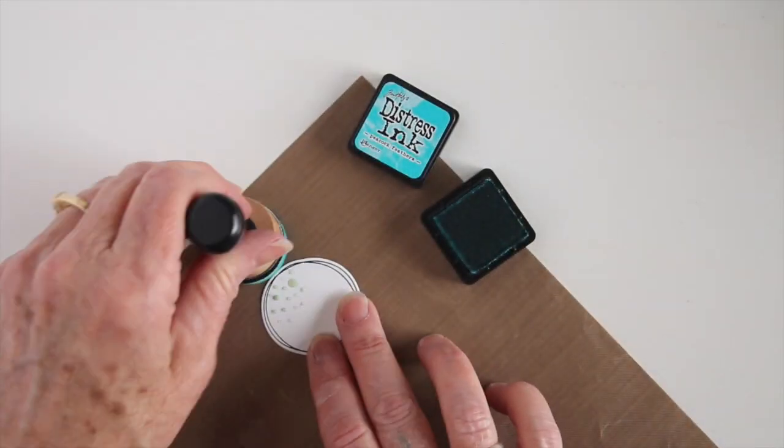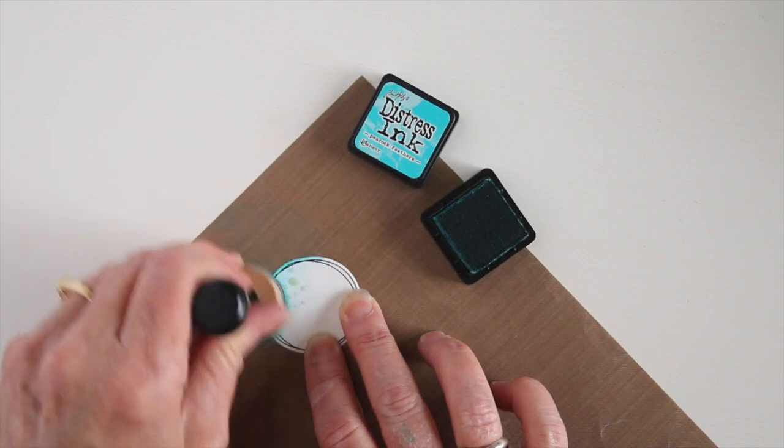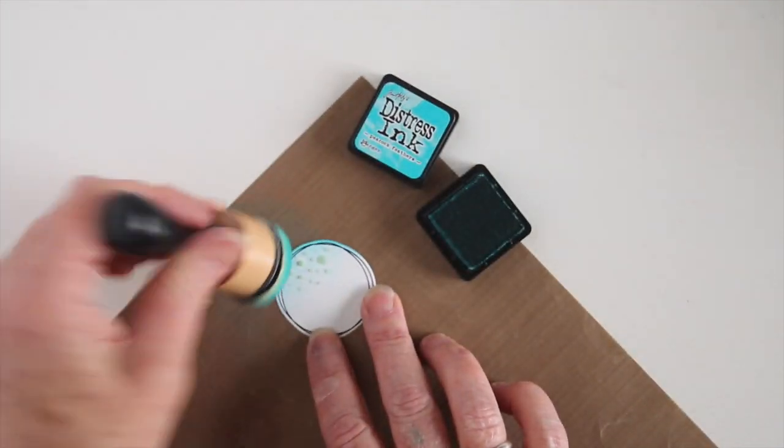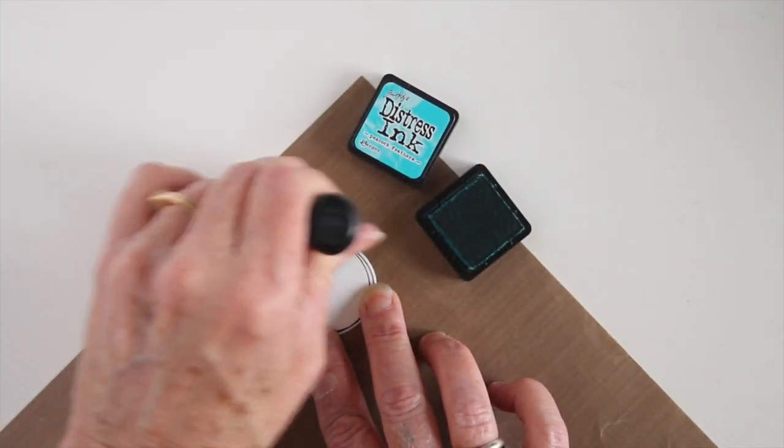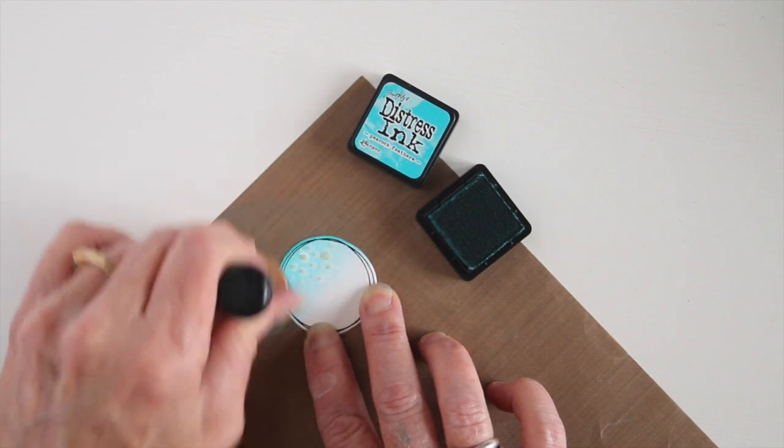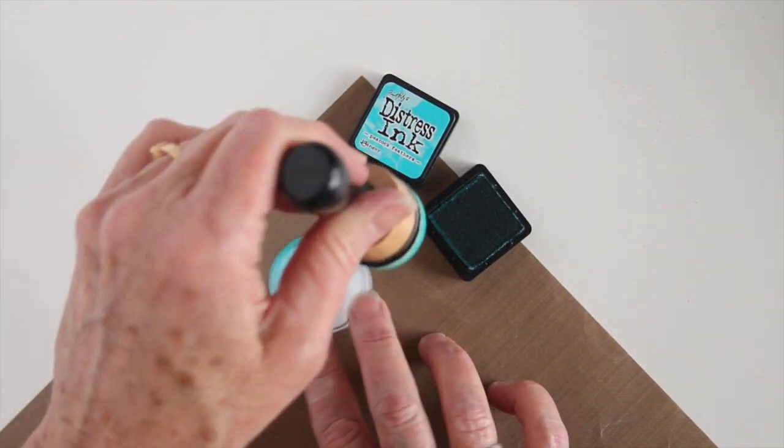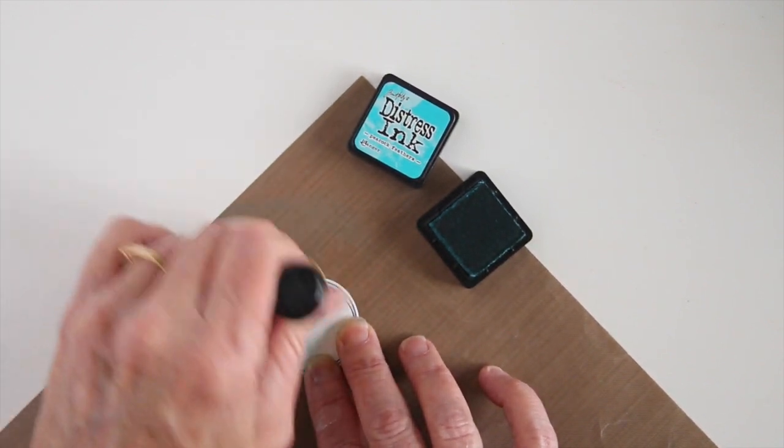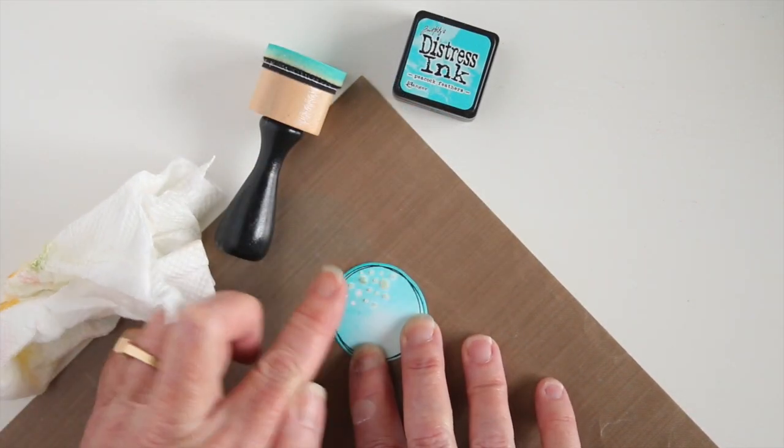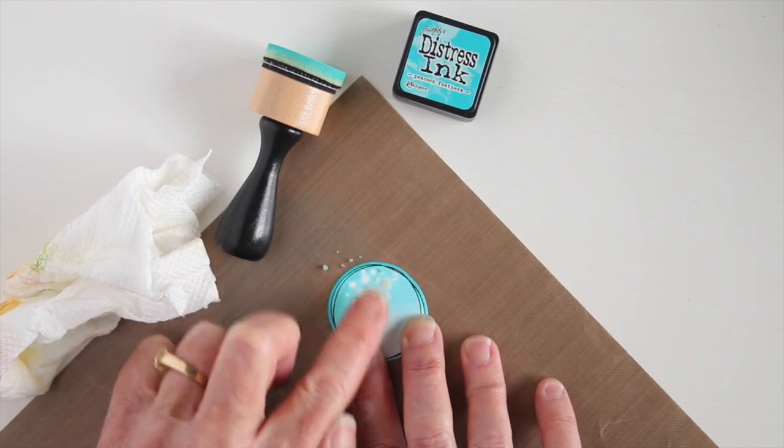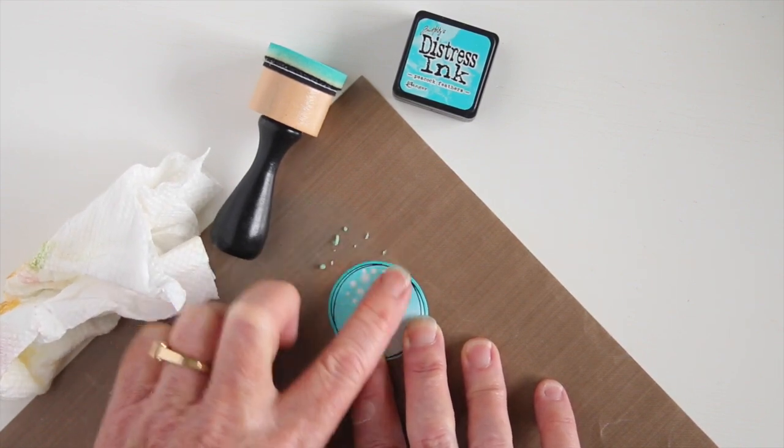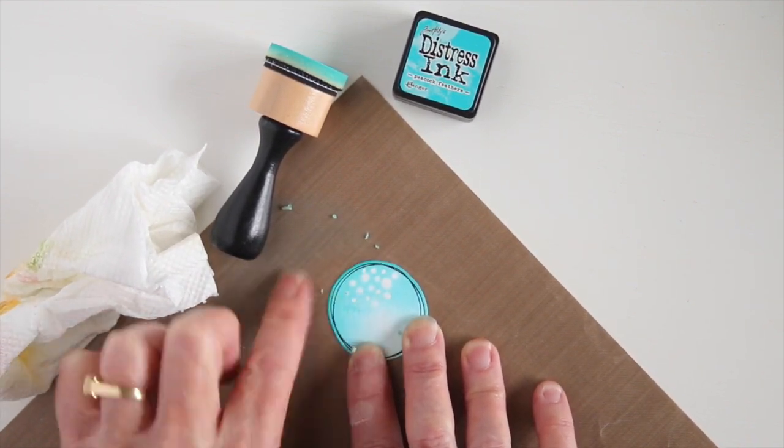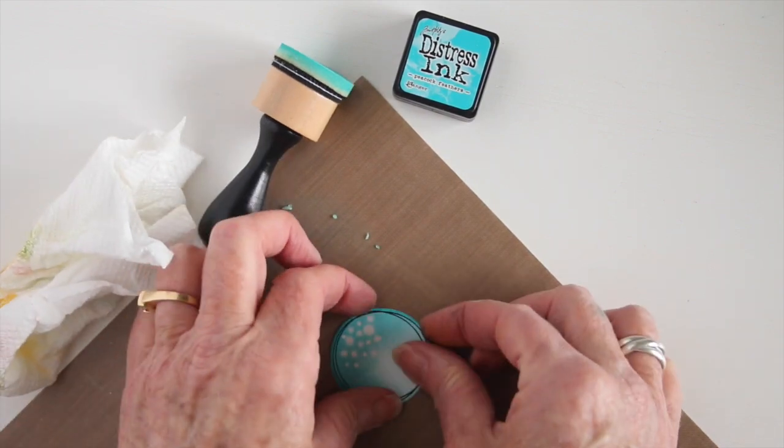Okay, now that that's dry I'm using my Peacock Feathers and I'm going to go ahead and swirl this around. This does stand up a little bit off the paper so if you need to you can go ahead and just blot your ink down by patting the blending tool right down on top of that masking fluid. And once you have your desired amount of color on your piece you can go ahead and just rub off the masking fluid. And now you can see how well it resists the ink.